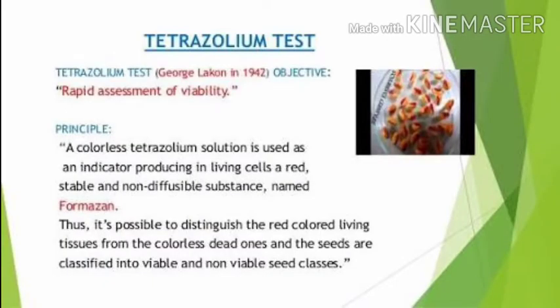In conventional methods, to determine if a seed is viable or not, we have to wait two to three days for germination. If germination occurs, the seed is viable; if germination does not occur, the seed is unviable. So the conventional method takes nearly three to five days to know whether the seed is viable or not.